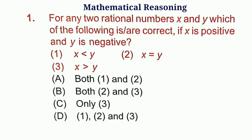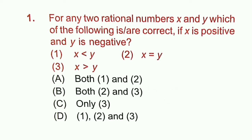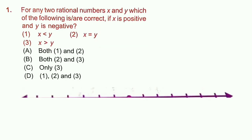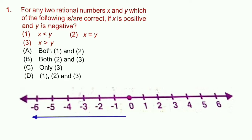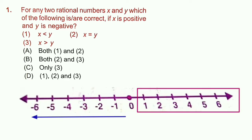Question 1 (Mathematical Reasoning): For any two rational numbers x and y, where x is positive and y is negative, which of the following is correct? On a number line, all numbers to the right of 0 are greater than 0 (positive), and all numbers to the left of 0 are smaller than 0 (negative). So all negative numbers are smaller than positive numbers.